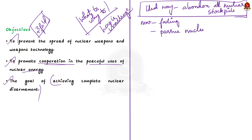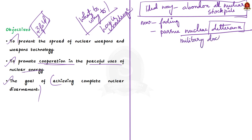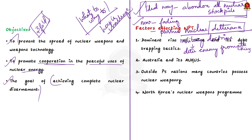What seems more practical today is to pursue nuclear deterrence among major powers and provide non-nuclear states with a nuclear umbrella. Nuclear deterrence is a military doctrine whereby the possibility that a country will use nuclear weapons in retaliation deters an enemy from attacking. The first problematic case is the dominant rise of China and its debt-trapping tactics.